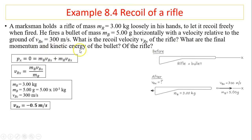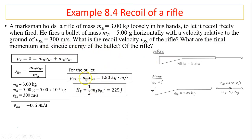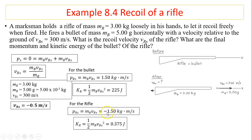Now let's find the final momentum and kinetic energy of the bullet. Substituting the numbers with units, you get 1.5 kilogram·meters per second for the bullet's momentum, and 225 joules for the bullet's kinetic energy. For the rifle, the momentum is negative 1.5 kilogram·meters per second — equal in magnitude and opposite to the bullet's momentum. The kinetic energy of the rifle is much smaller than that of the bullet because kinetic energy is directly proportional to velocity squared, so less velocity means much less kinetic energy.